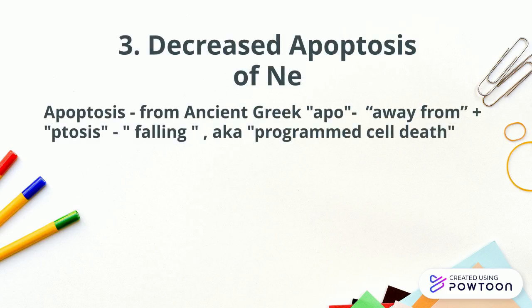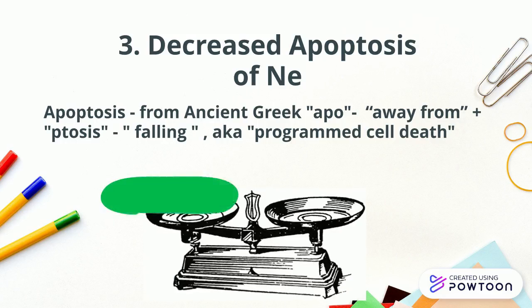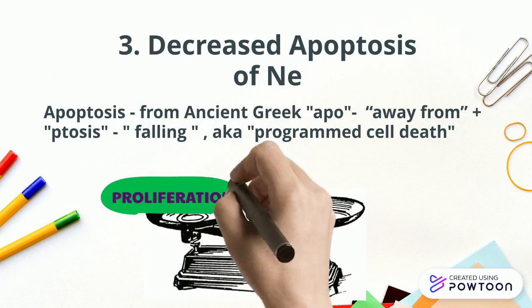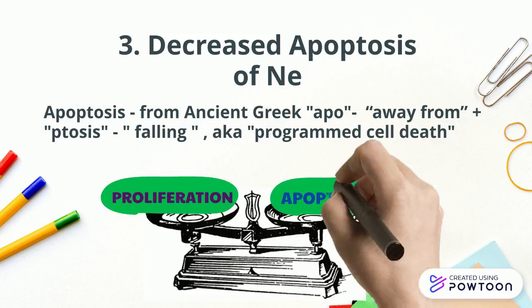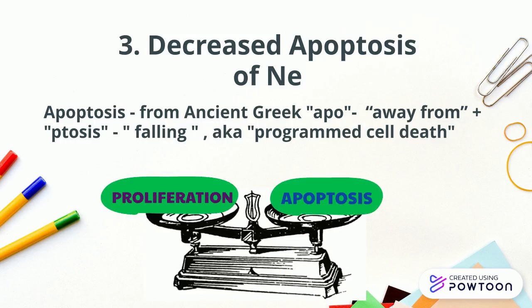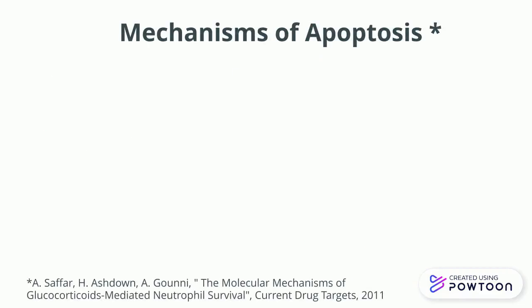The third mechanism is decreased apoptosis of neutrophils. Apoptosis comes from the ancient Greek words 'apo' meaning away from and 'ptosis' meaning falling, also known as programmed cell death. In the body there is a balance between cell proliferation and apoptosis that maintains homeostasis. There are two pathways of apoptosis.